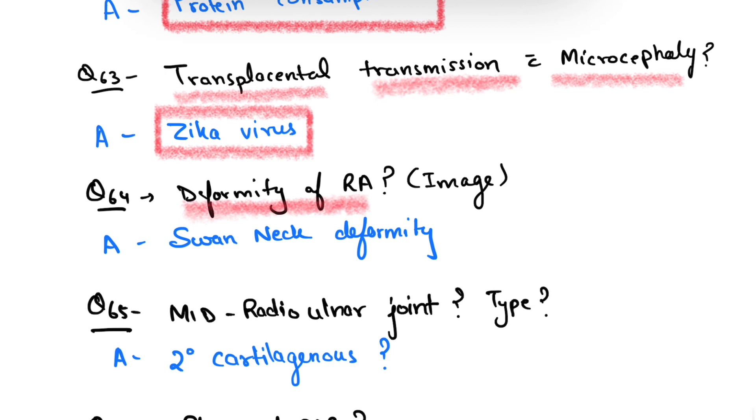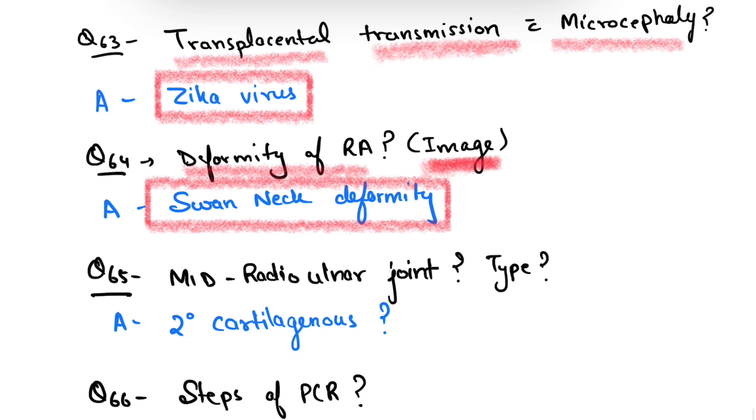Deformity of rheumatoid arthritis - the image was given and that was swan neck deformity. Question number 65: mid radio-ulnar joint. They asked about the type of joint. It could be a secondary cartilaginous joint.